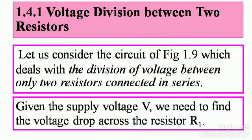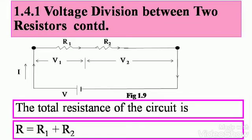Voltage division between two resistors. Let us consider the circuit of figure 1.9, which deals with the division of voltage between two resistors, that is only two resistors connected in series. Given the supply voltage V, we need to find the voltage drop across the resistor R1. Have a look at the circuit and you will get a better idea.